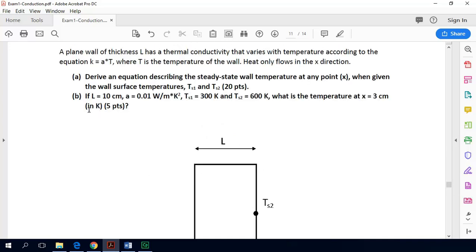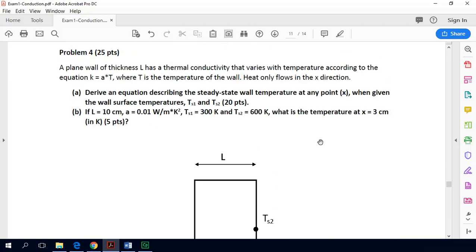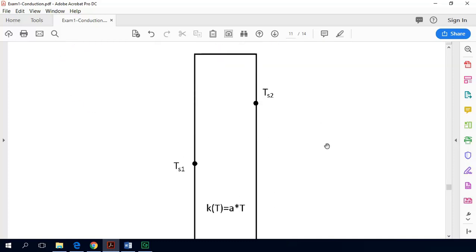So then we are asked to just plug in numbers into our equation and find the temperature at a specific location, which is x equals 3 centimeters into the wall. Alright, so let's start to digest this problem.